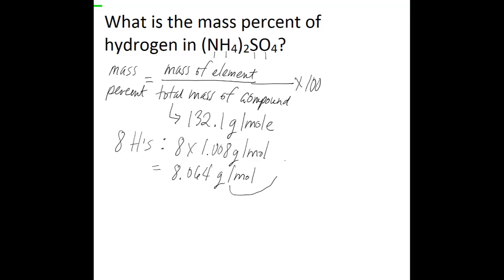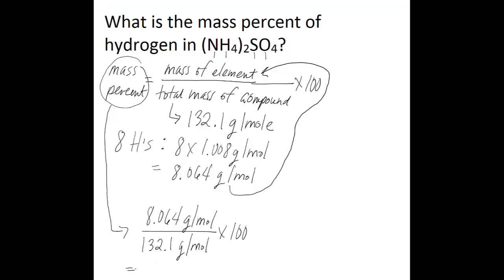So now you have the mass of your element. So all you have to do then to find the mass percent is to divide 8.064 grams per mole by 132.1 grams per mole. Then multiply that by 100. And what you'll get when you do that is 6.104 percent hydrogen.